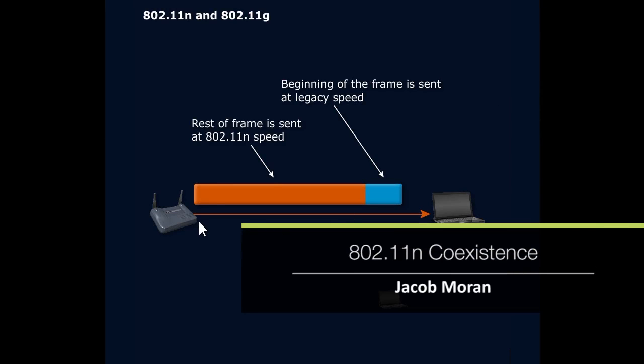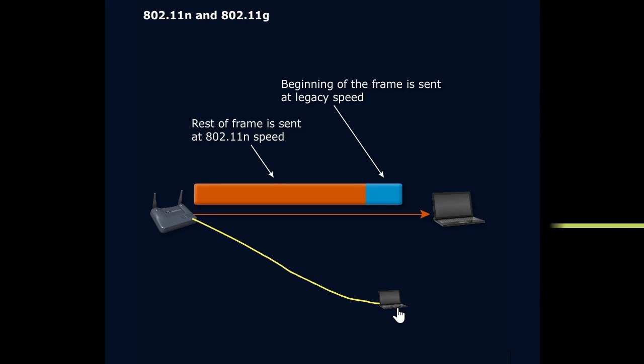The compatibility issues with 802.11 B and G on the same network are not the only coexistence issues you're going to deal with. You're also going to see problems when you try and mix A and N or G and N.